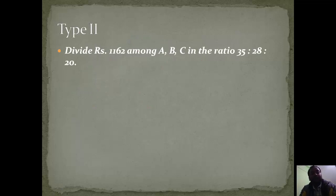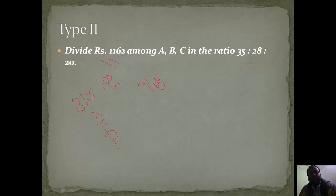Now the second type: suppose we have to divide a certain amount among 3 persons in the ratio 35 is to 28 is to 20. In such questions we first add the ratio parts: 35 + 28 + 20 = 83. For A's share we take 35/83 × 1162; for B's share, 28/83 × 1162; and for C's share, 20/83 × 1162. We solve each to get their individual share.